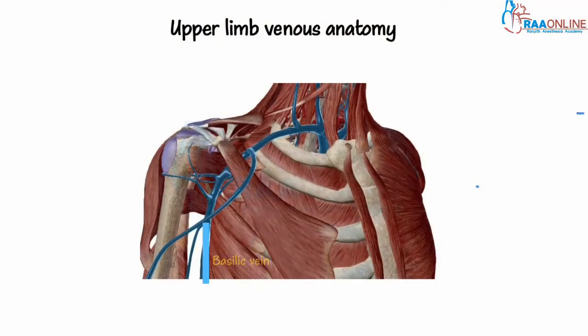The basilic vein lies on the medial aspect of the arm, and beyond the inferior border of the teres major it is called the axillary vein, which travels into the thorax. Beyond the first rib, it is called the subclavian vein.